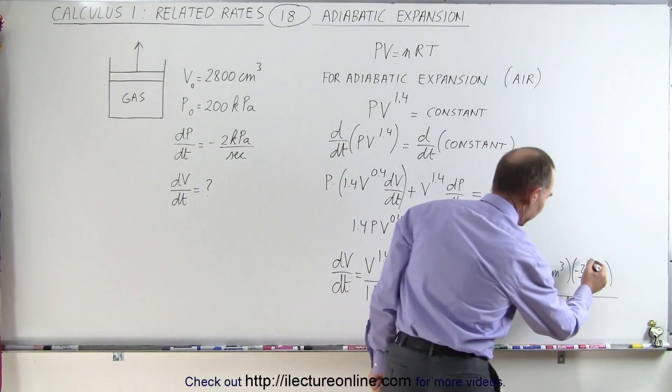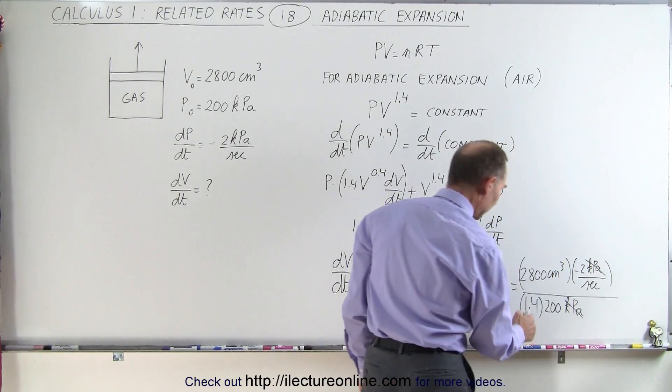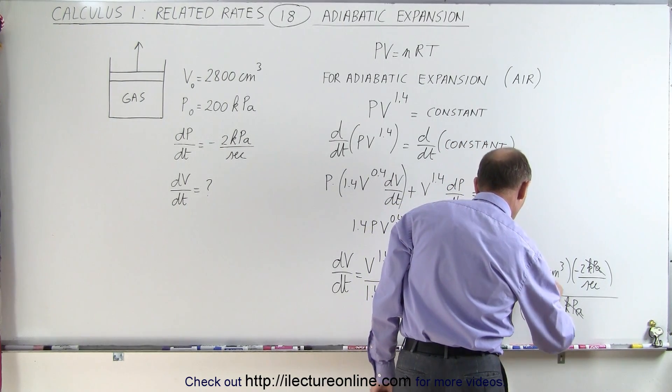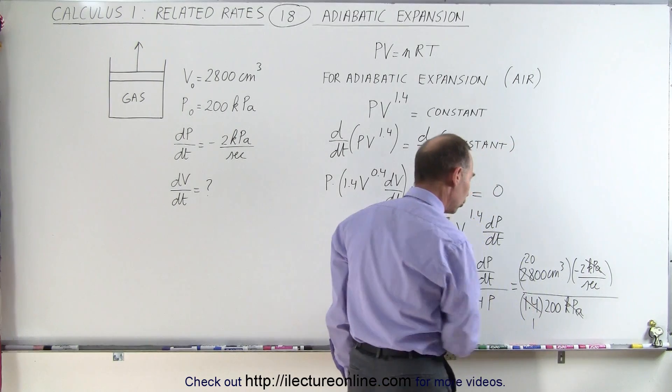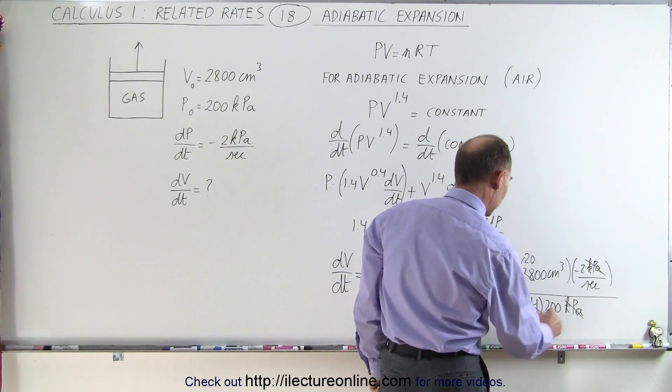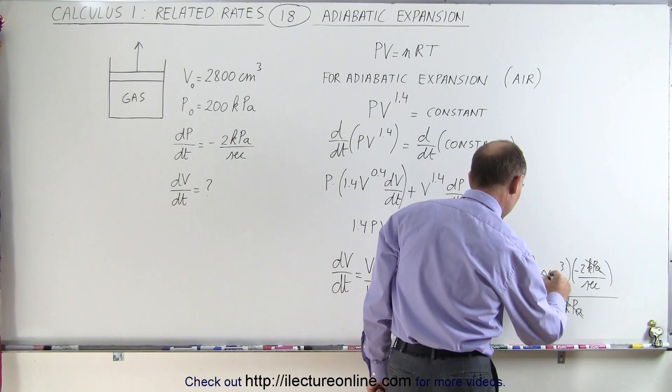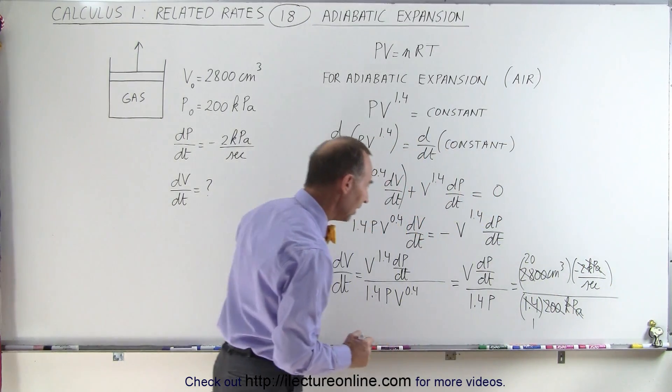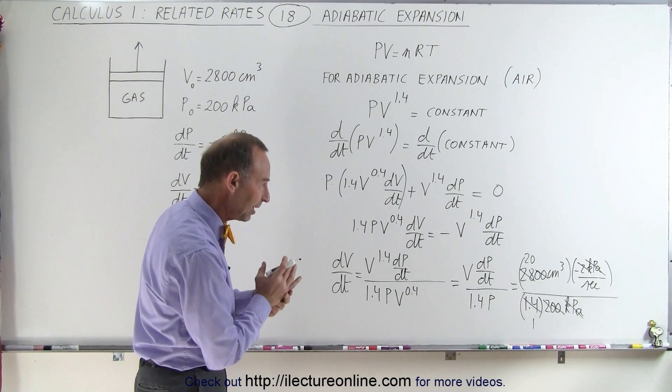The kilopascals cancel out. The 1.4 goes into 2.8, that would be 2 times. That would be 20 instead of 28. Those two zeros cancel out with those two zeros, and this two cancels out with those two. That makes it easy. And then finally, when we collect everything that's left...